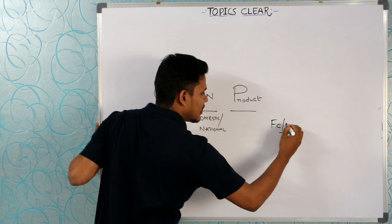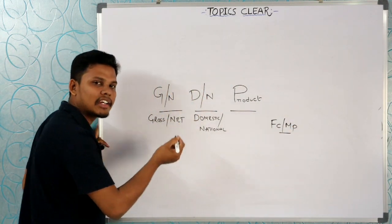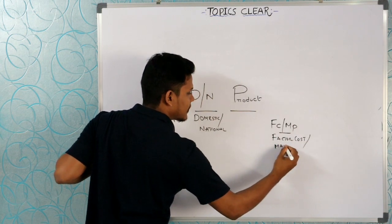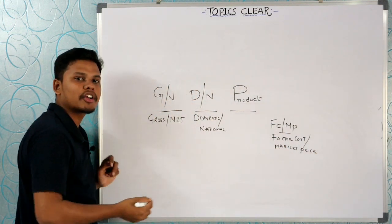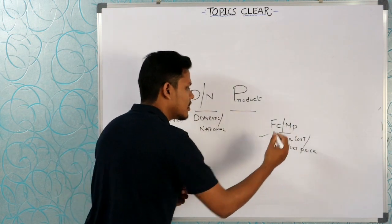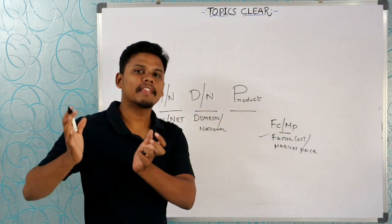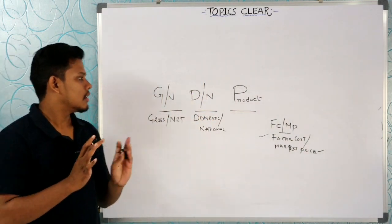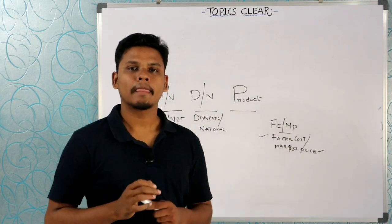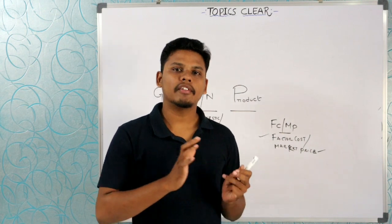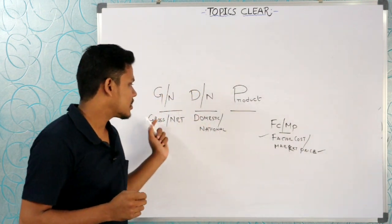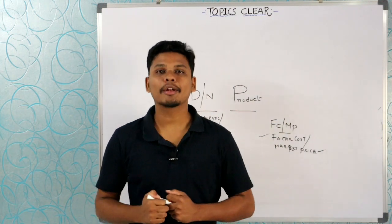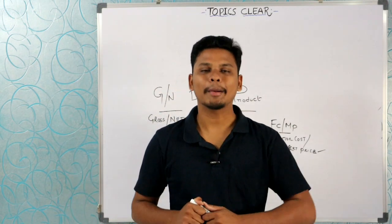The subscript is either FC or MP — factor cost or market price. So the national income aggregates GDP, NDP, NNP, and GNP have been discussed. We will now talk about major tools of national income.